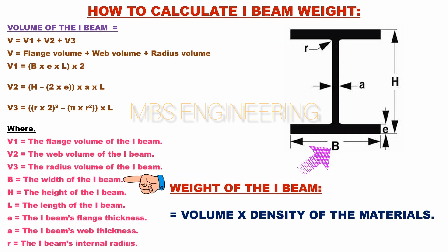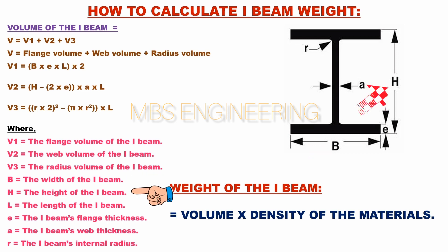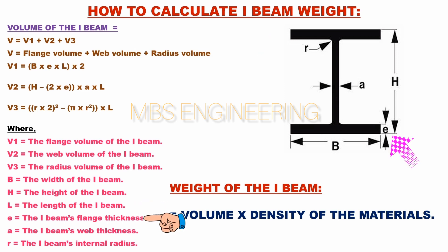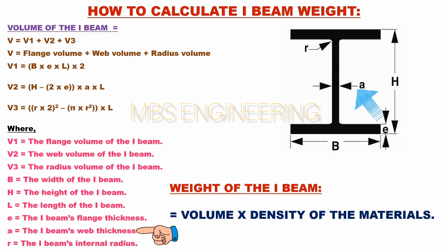Where: B is the width of the I-beam, H is the height of the I-beam, L is the length of the I-beam, A is the I-beam's flange thickness, A is the I-beam's web thickness, and R is the I-beam's internal radius.